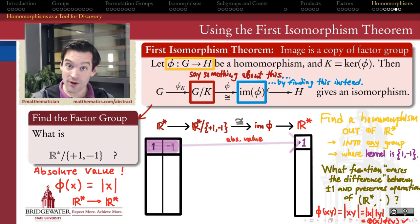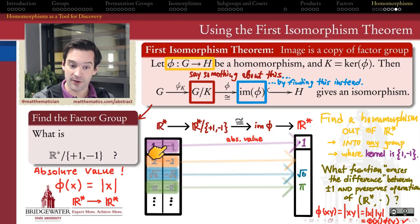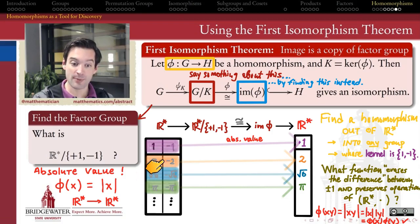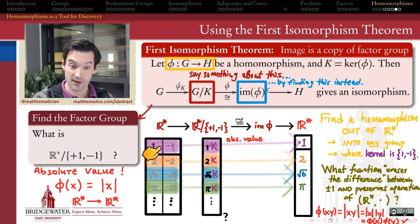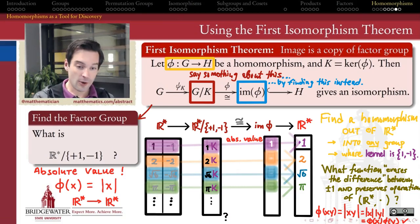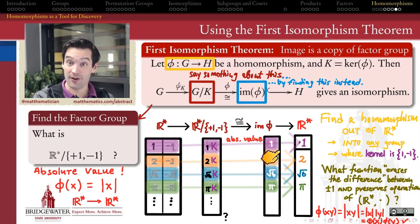This is the function that does our work for us—we just apply the First Isomorphism Theorem. Cosets of the kernel look like {2, -2}, {√6, -√6}, {π, -π}, each made up of two elements that both map to the same value under the absolute value function. The quotient R*/{+1,-1} blurs the distinction between elements of the same coset, so each coset is treated as a single element. I want to know more about this algebraic structure, so I look at the image of phi as a subgroup of R*.